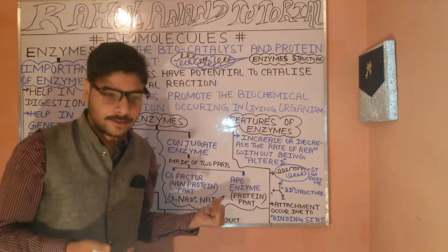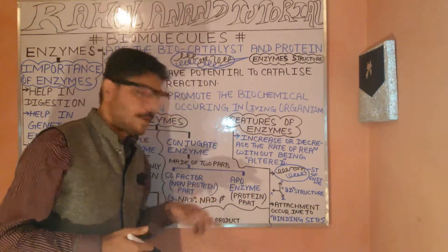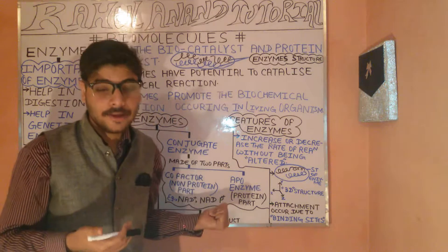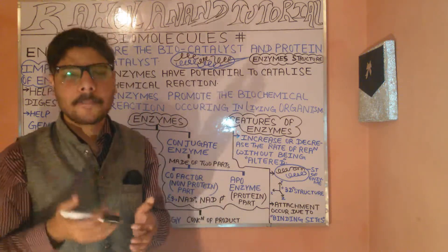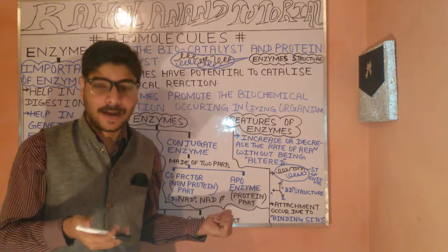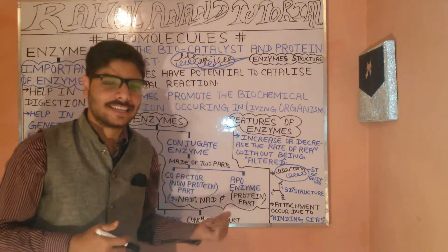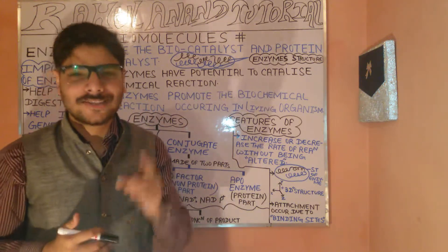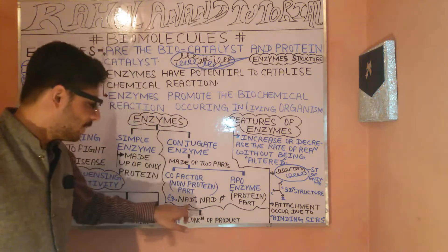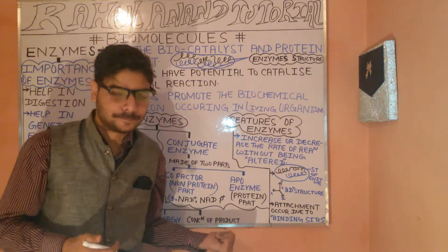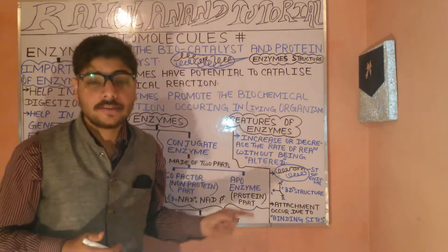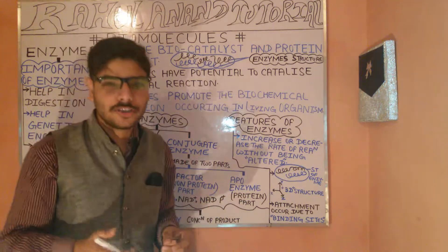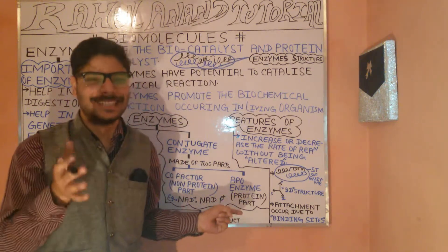Co-enzymes and co-factors are the non-protein components. Basic examples of co-enzymes include NAD+ and NADP+. The apo-enzyme refers to the proteinous part of the enzyme. Together, the apo-enzyme and co-factor form the complete conjugate enzyme.